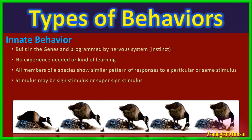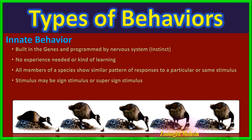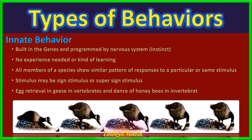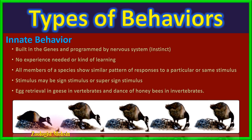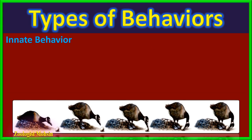The stimulus is a fixed shape or pattern called a sign stimulus in its normal size. If the size of that stimulus increases naturally or artificially, it is termed a super sign stimulus. One amazing thing to note is that birds prefer the super sign stimulus when both sign and super sign stimuli are available at the same time. Two famous examples of innate behaviors are egg retrieval by geese and the dance of honey bees to communicate the location of a food source.